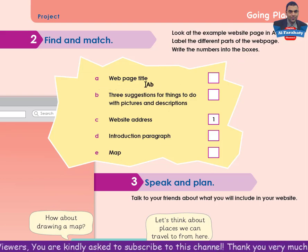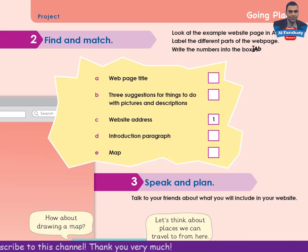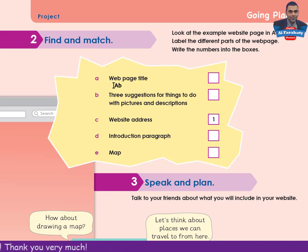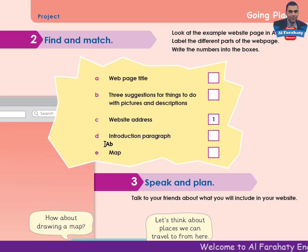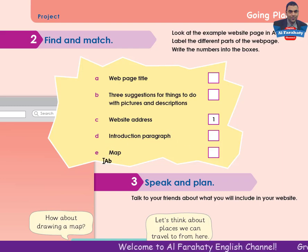You are asked to label the different parts of the web page. A: Web page title. Dear students, the words 'web page' can be written as one word or as two words with a space — both are correct. B: Three suggestions for things to do with pictures and descriptions. C: Website address — this is done for you, number 1. D: Introduction paragraph. E: Map.